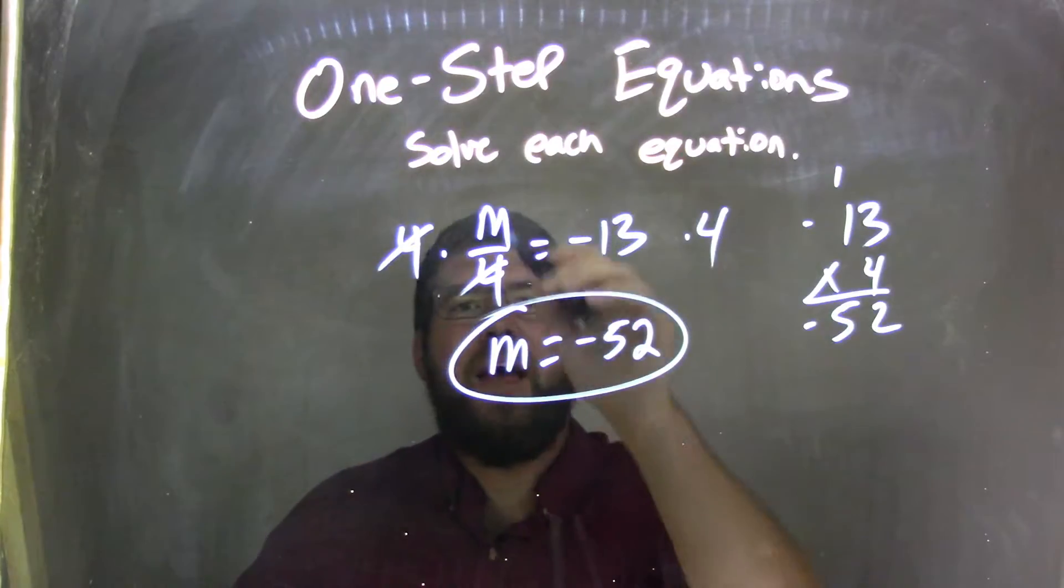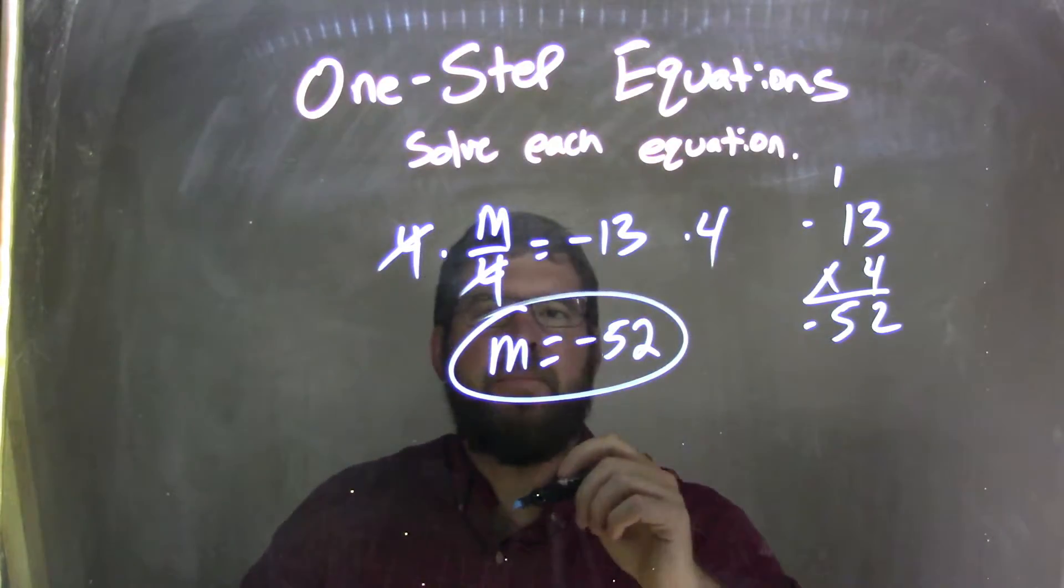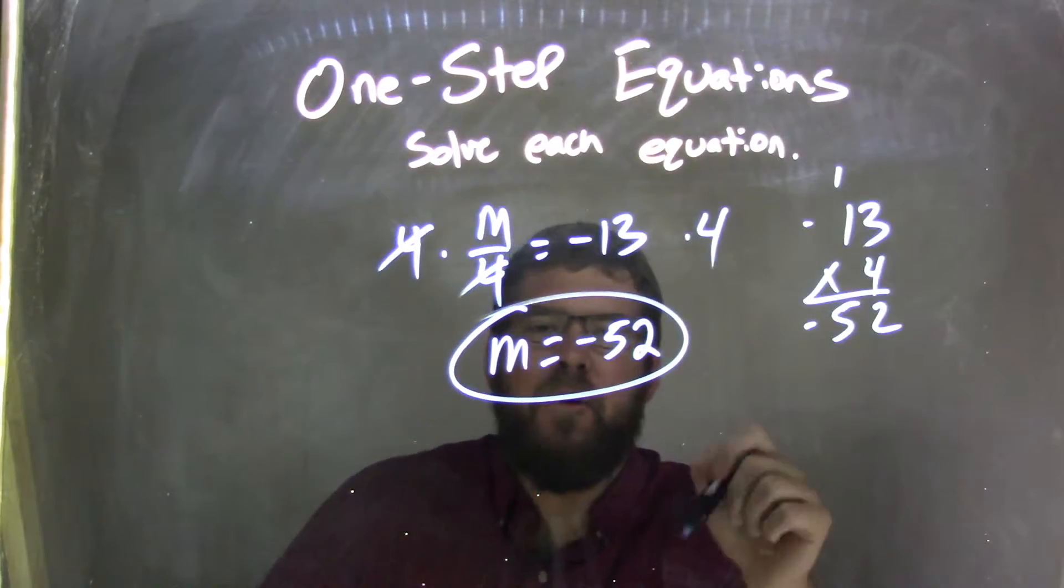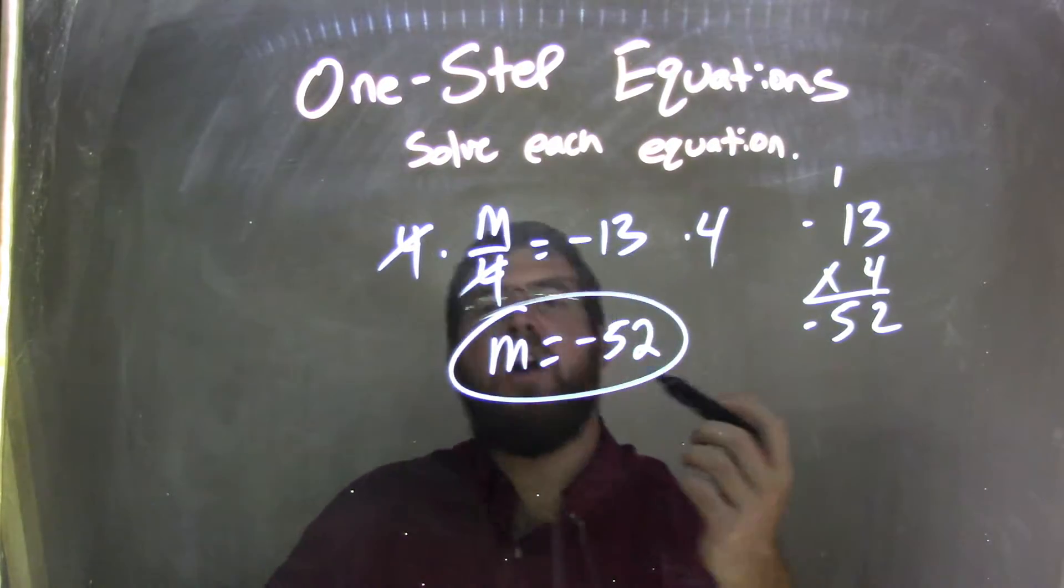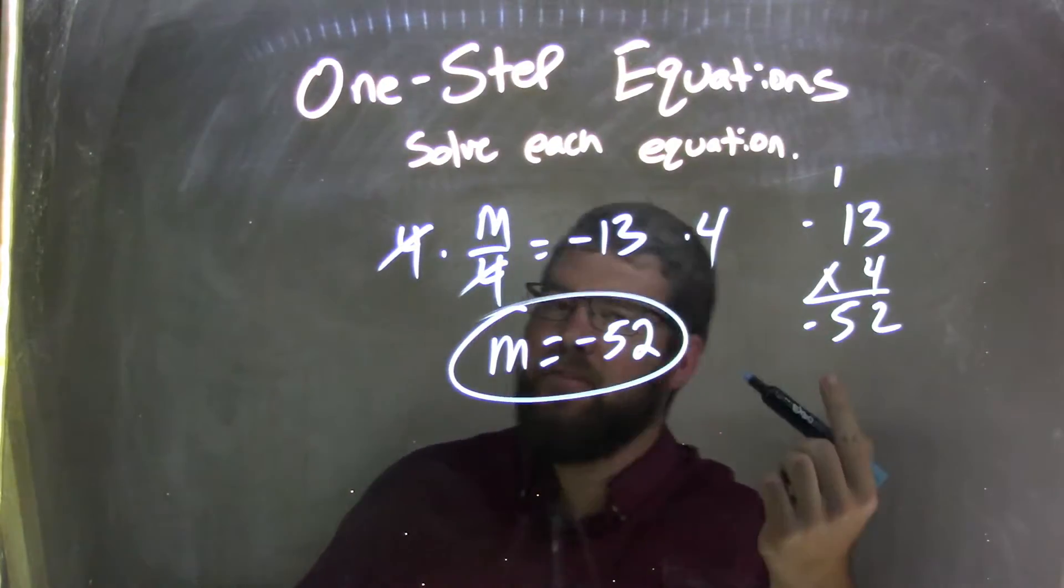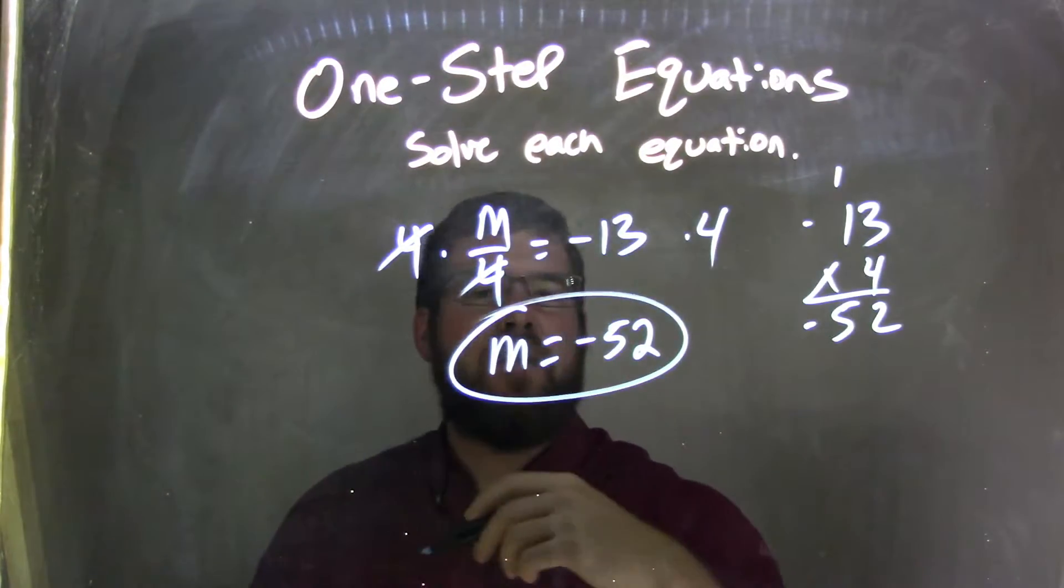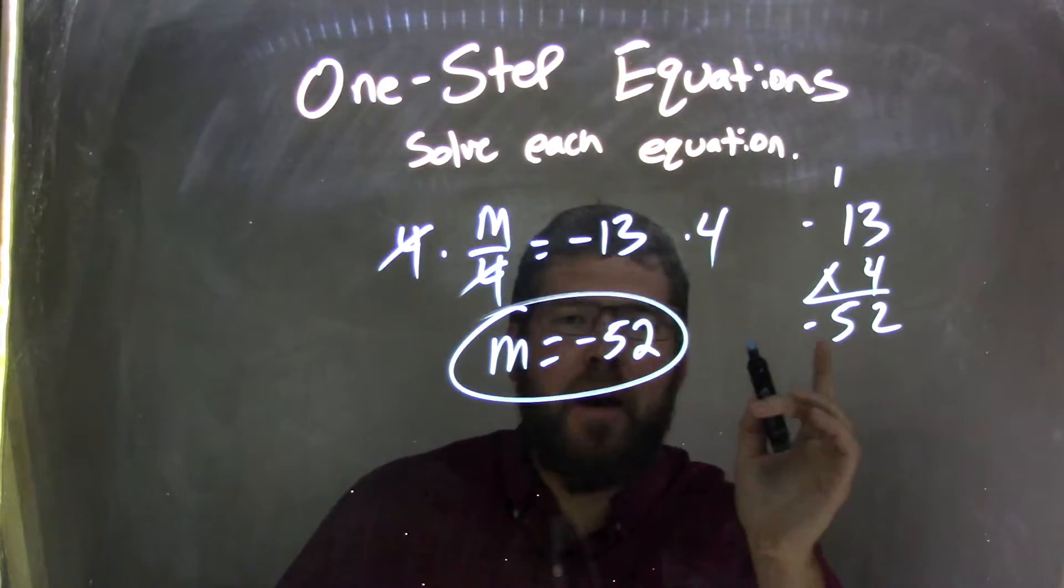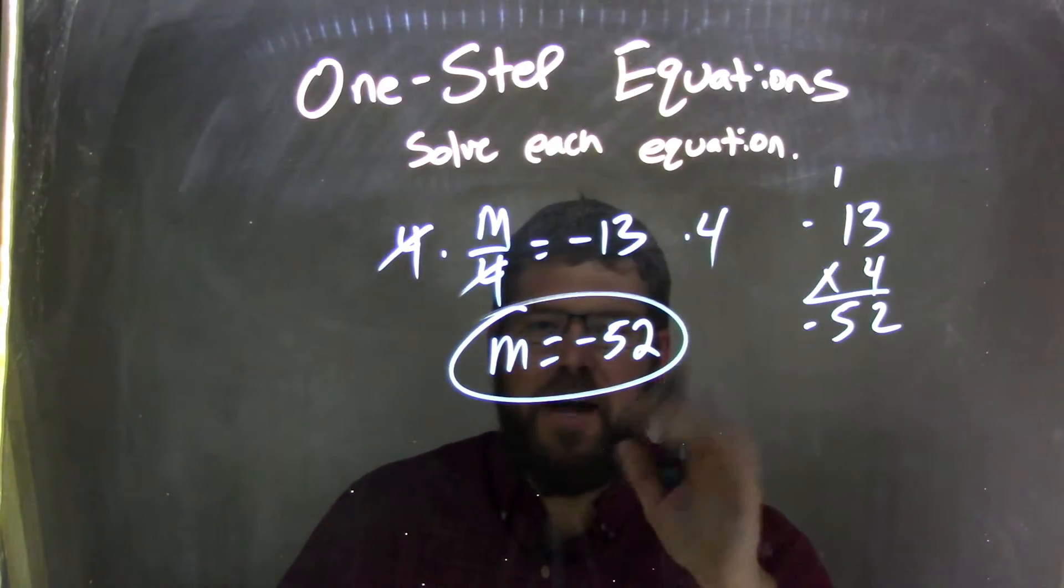Let's recap. We started with m over 4 equals negative 13. m over 4 is the same thing as division, m divided by 4. Opposite of division is multiplication, so I chose to multiply 4 to both sides. What you do to one side, you have to do to the other. The 4 is canceled on the left, brought down the m. Negative 13 times 4. I knew a negative times a positive is a negative, so my final answer had to be negative.